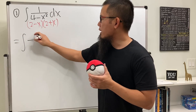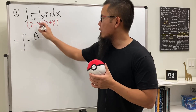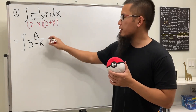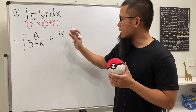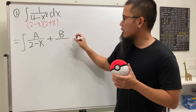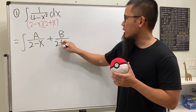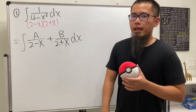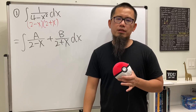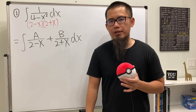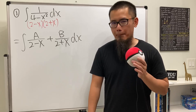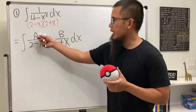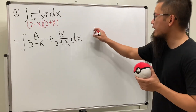Then go ahead and just break this down into two smaller fractions. The first one will just have a constant A over the denominator (2 minus x), and for the second one, we just have some other number B over the denominator (2 plus x). For the distinct linear factors, this is actually the happy case, because we can do the cover-up method to figure out A and B.